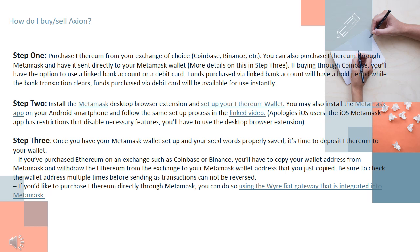How do I buy and sell Axion? Step 1: Purchase Ethereum from your exchange of choice — Coinbase, Binance, etc. You can also purchase Ethereum through Metamask and have it sent directly to your Metamask wallet. If buying through Coinbase, you'll have the option to use a linked bank account or a debit card. Funds purchased via linked bank account will have a hold period, while funds purchased via debit card will be available for use instantly.